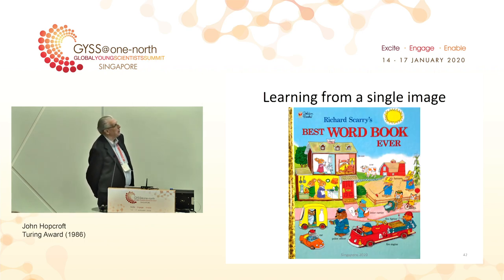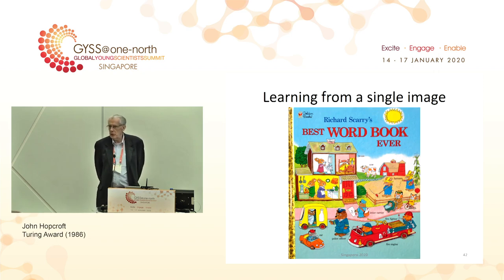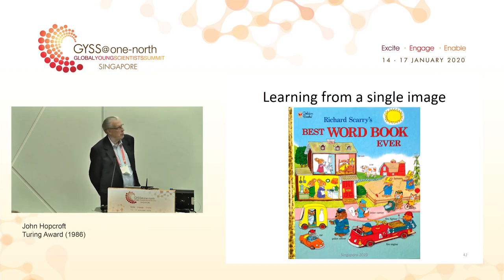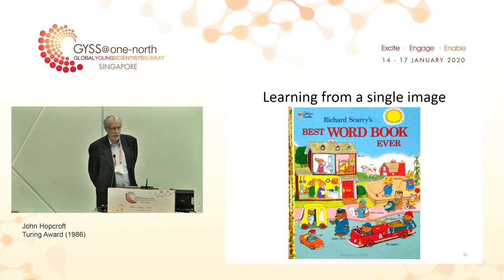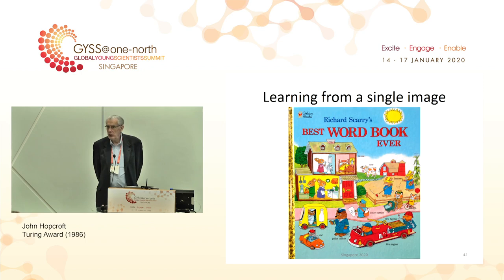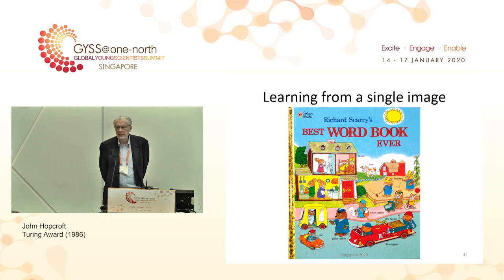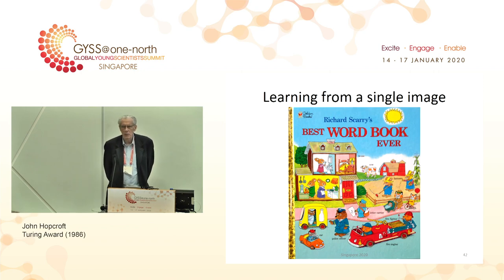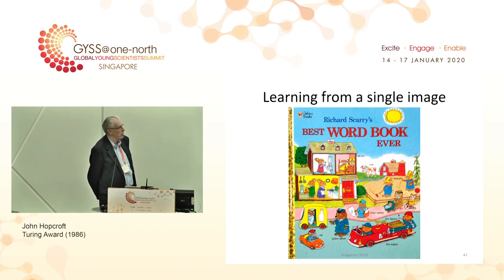Next I want to talk about learning from a single image. Right now when we train a network, we train it with a thousand images for each category, which takes a lot of work. Somehow you would like to train your network from a single image. When my daughter was two or three years old, I had a book called the Best Word Book Ever — we'd sit on the couch and I'd point to pictures and say dog, cat, house, tree, and after a while she would identify them herself.